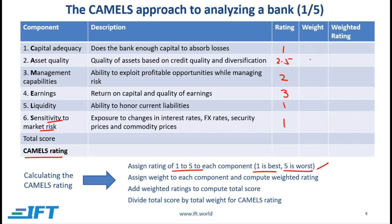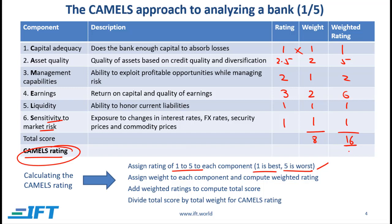Next, we assign a weight to each component based on our judgment about relative importance. Say capital adequacy gets a weight of 1, asset quality is extremely important so we allocate a weight of 2, management capabilities gets 1, earnings gets 2, and the final two components get a weight of 1 each. We then compute the weighted rating as the product of score and weight for each component: giving us 1, 5, 2, 6, 1, and 1. Adding these gives 16; adding all weights gives 8. The CAMELS rating is 16 divided by 8, which equals 2.